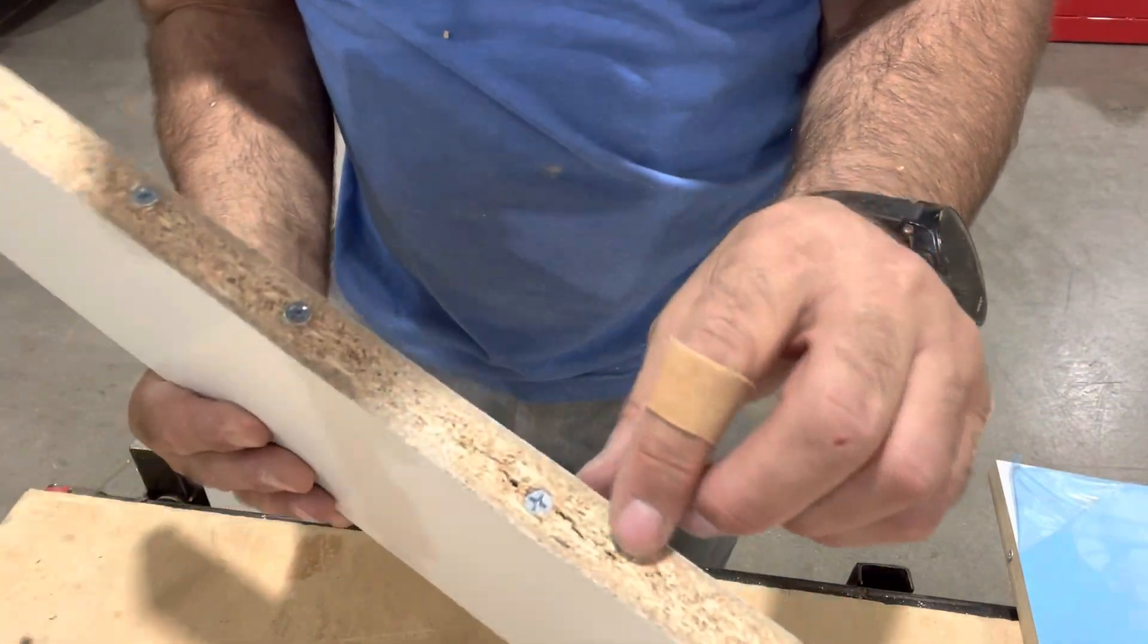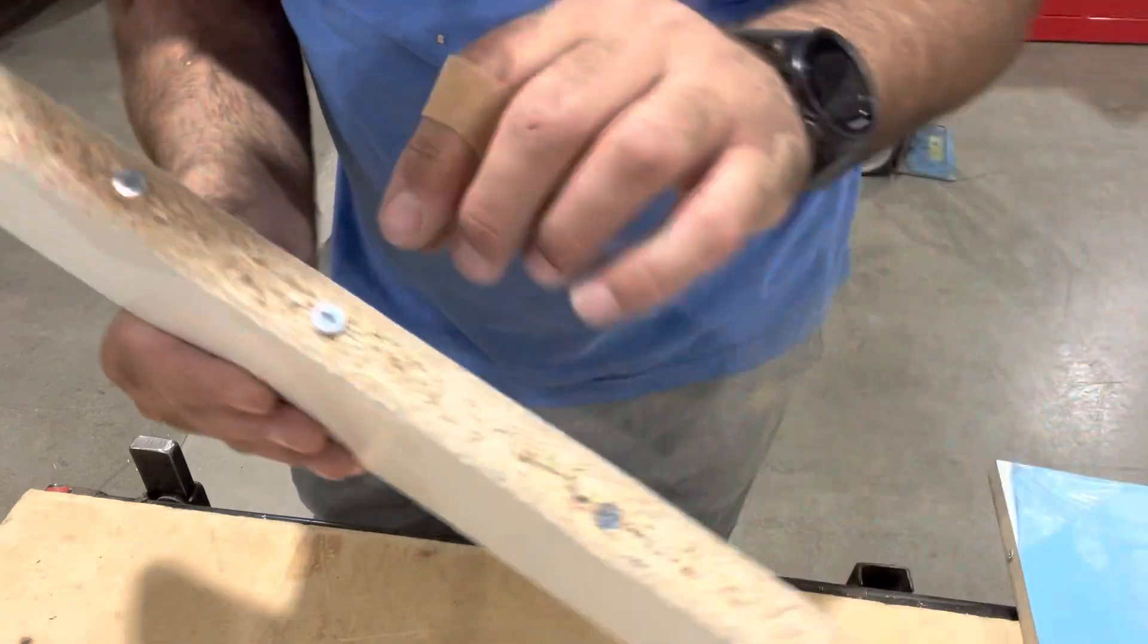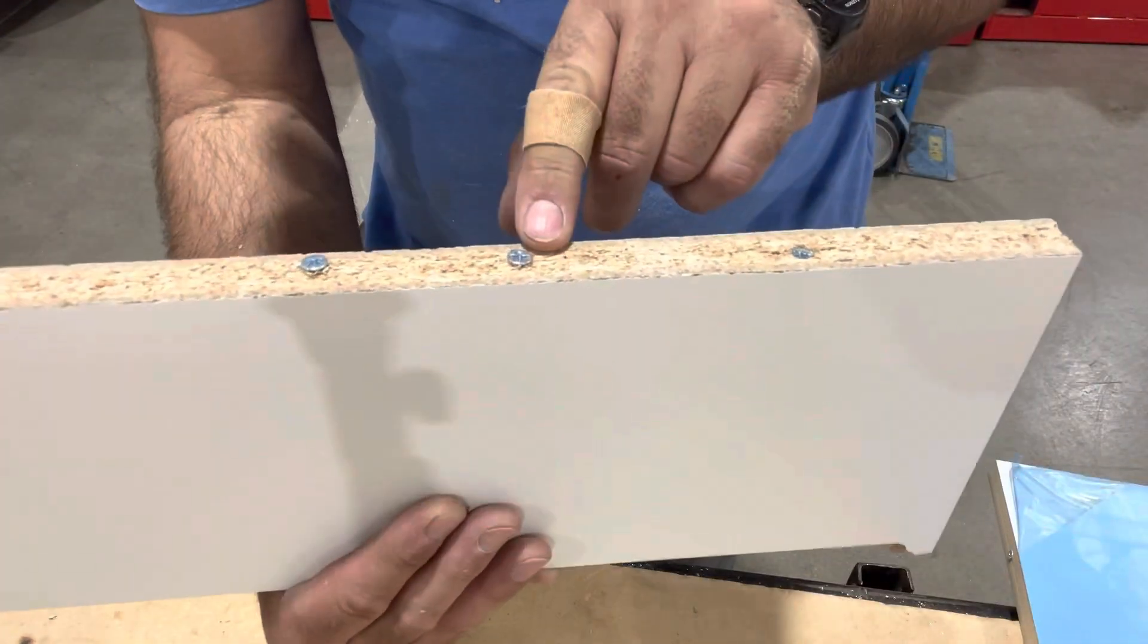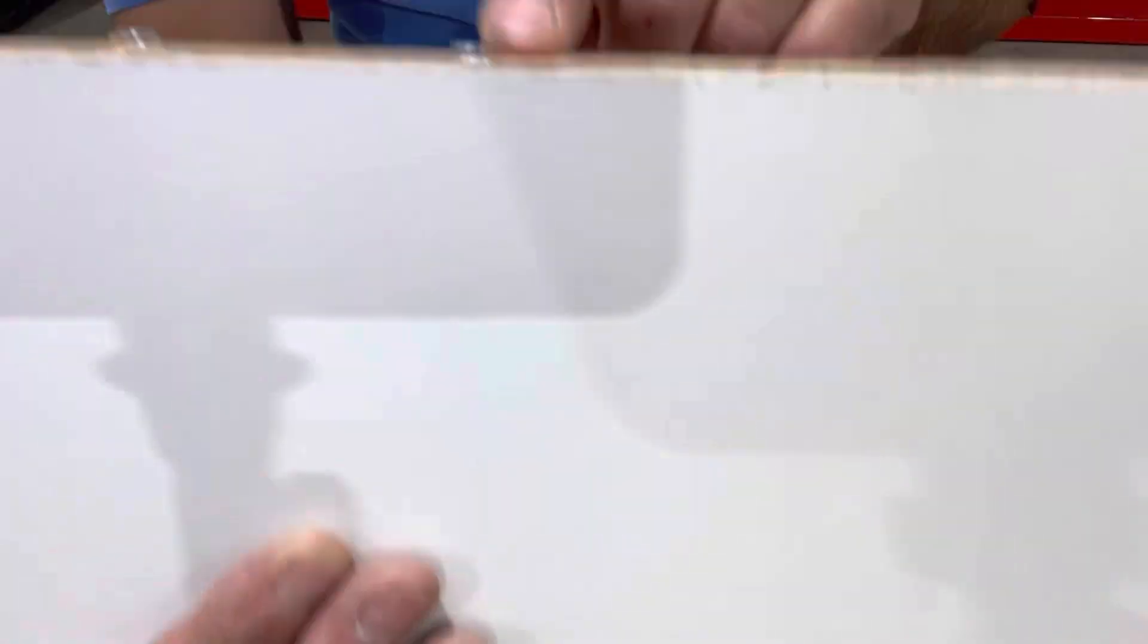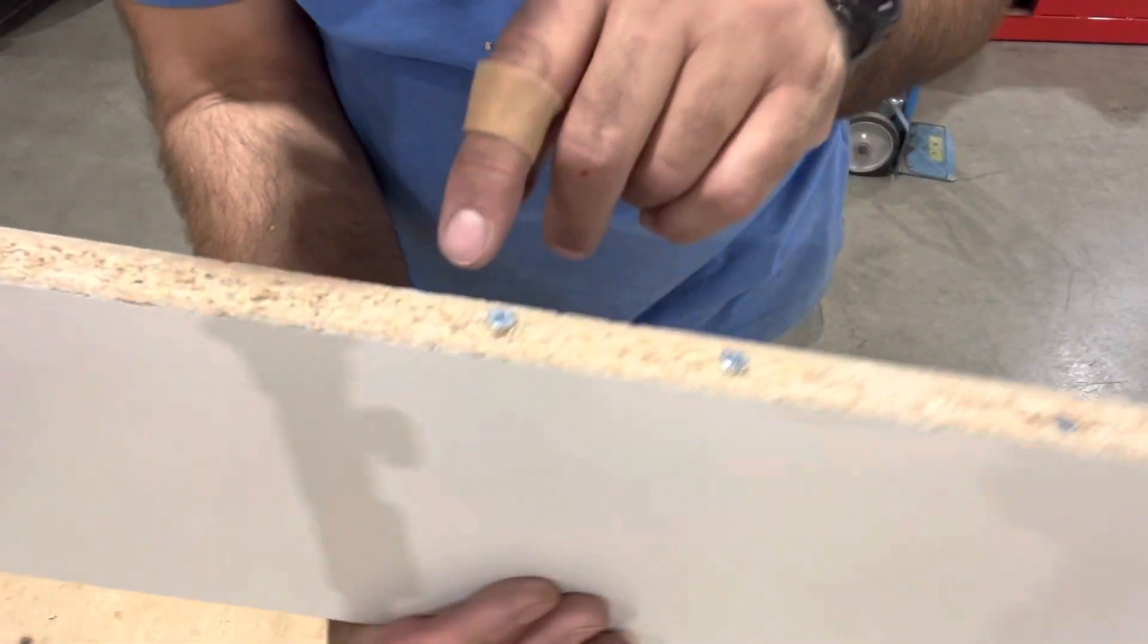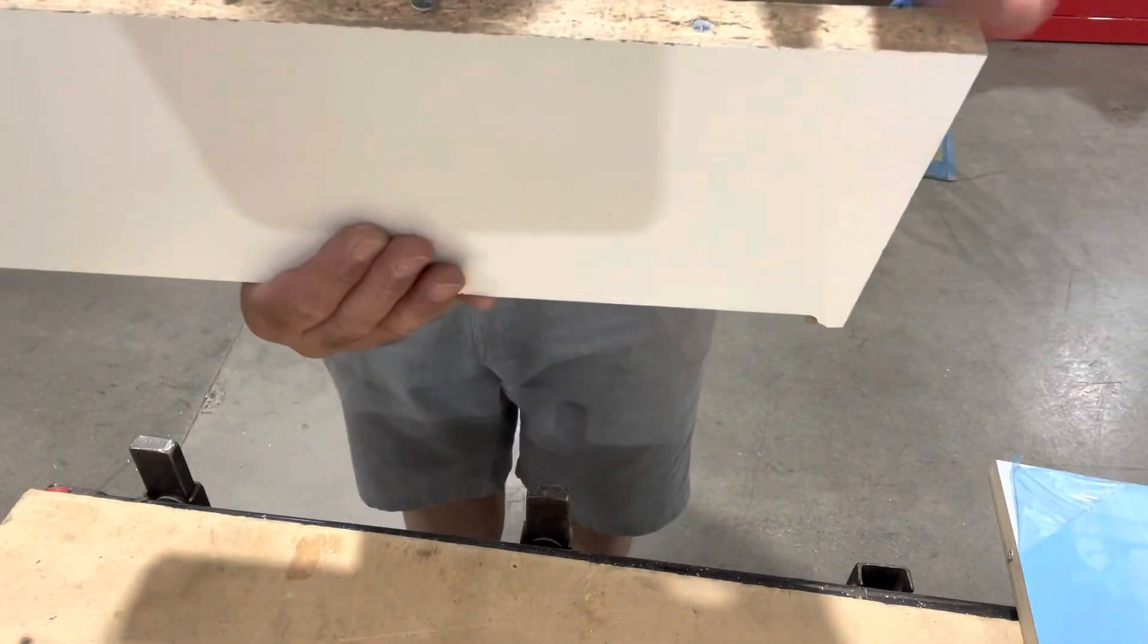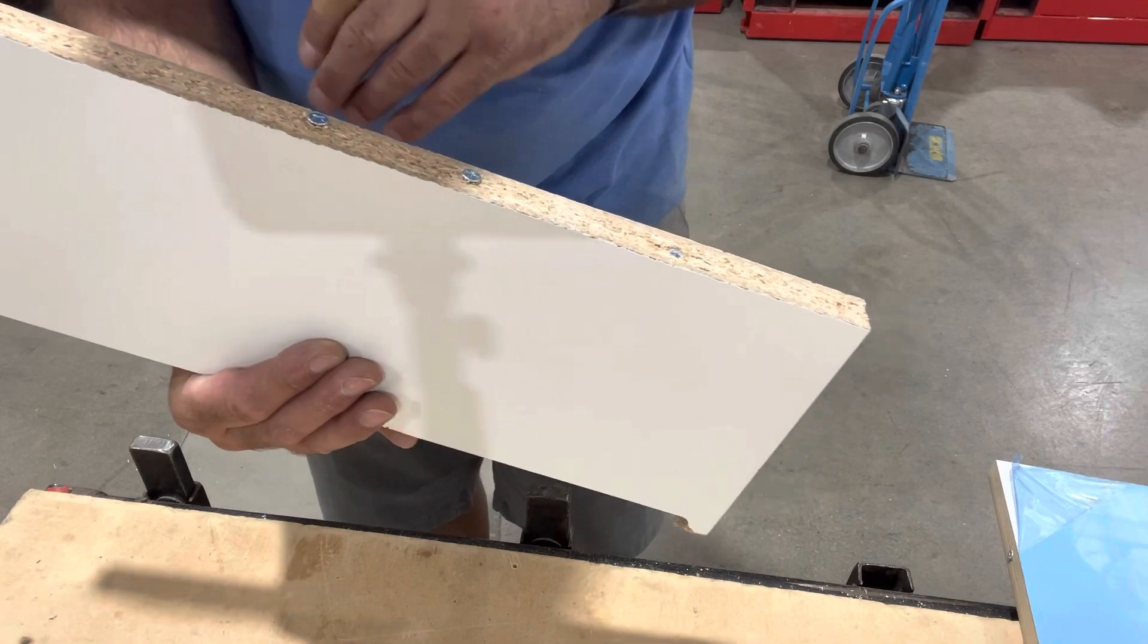So this one here, when we ran the screw down into it, it widened up and split it out. But this guy here, when we stopped, the second one, we stopped the head almost flush with it. We didn't get any separation in the horizontal plane. Same thing when we put another one two inches next to it. So you can see that the particle board in the horizontal plane holds much better.